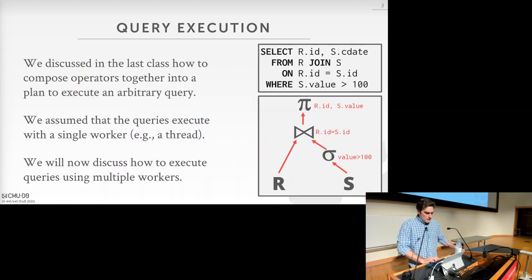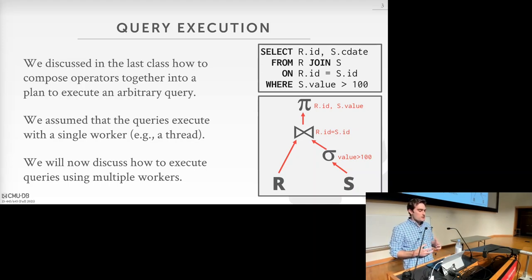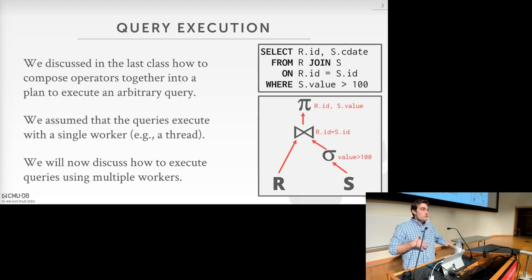Jumping right in to query execution. Last class we talked about how we can compose operators together into a plan to allow our DBMS to execute an arbitrary query. We go from a SQL query, which gets translated to a logical plan with abstract operators, and then finally to a physical plan which describes how we're going to specifically execute each operator.